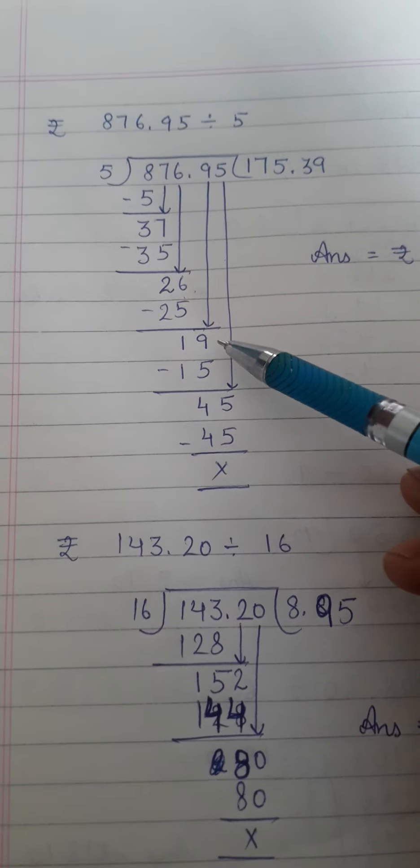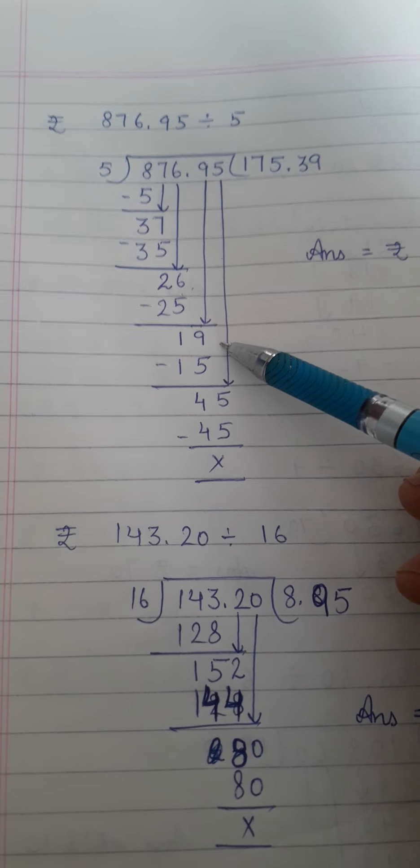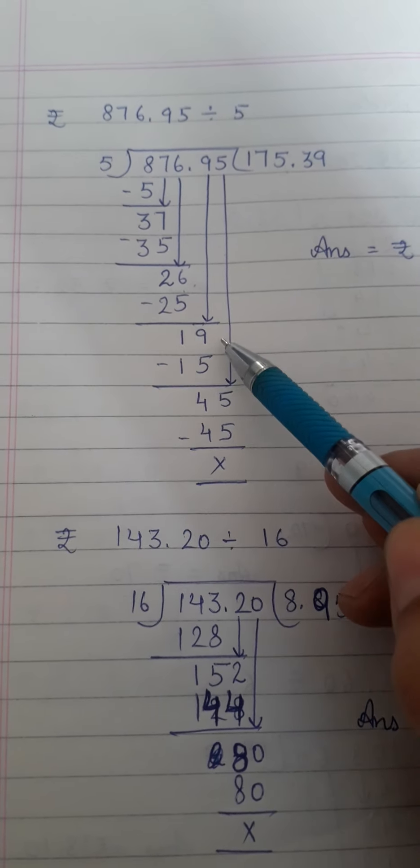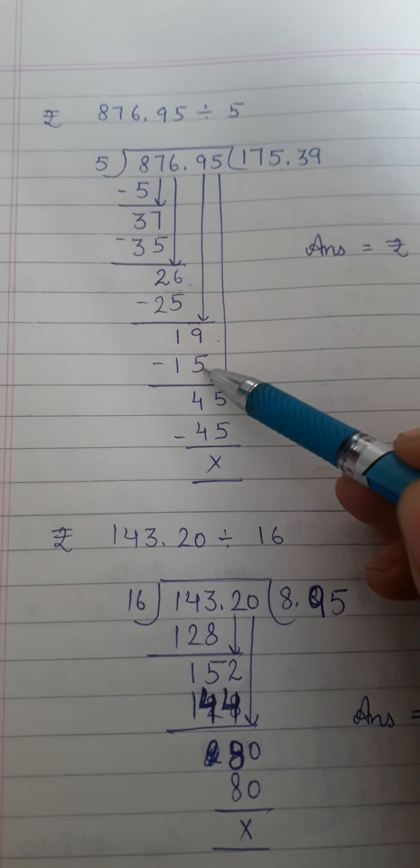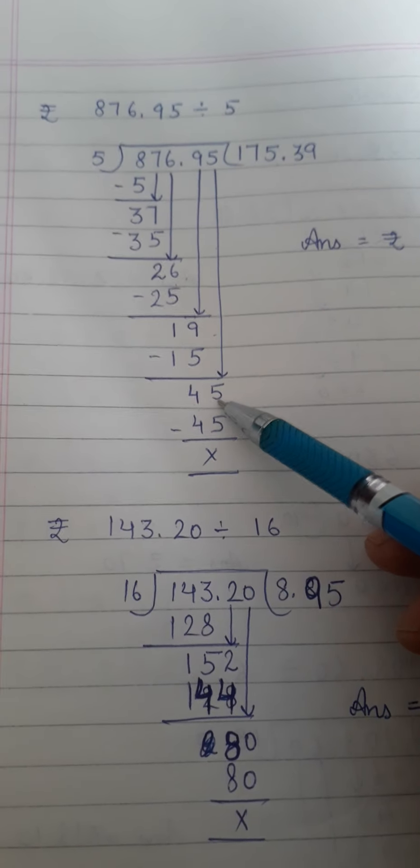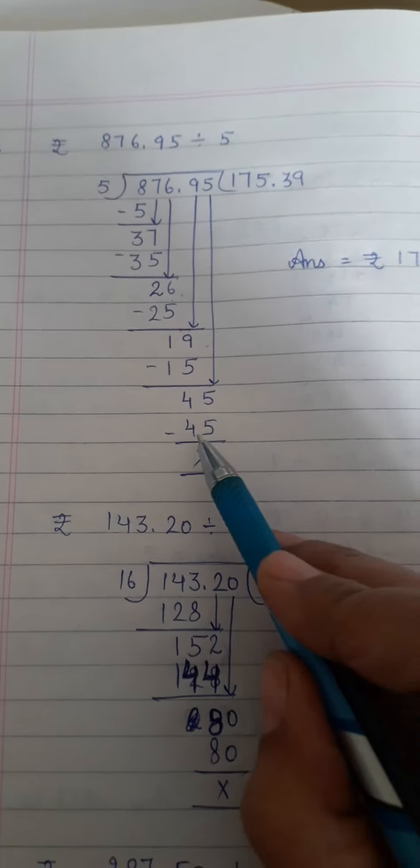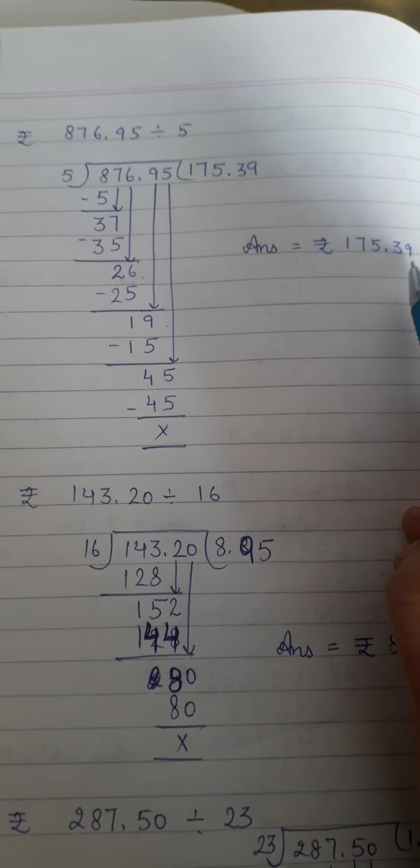Speak table of 5 for 19. 5 ones are 5, 5 twos are 10, 5 threes are 15, 5 fours are 20. 20 is bigger than 19. So 5 threes are 15. 19 minus 15 is 4. Next digit is 5. Bring it down from top. 5 nines are 45. So your answer is rupees 175 and 39 paisa.